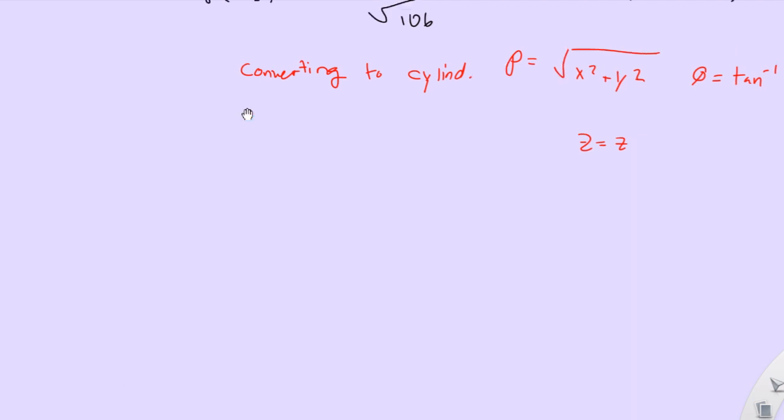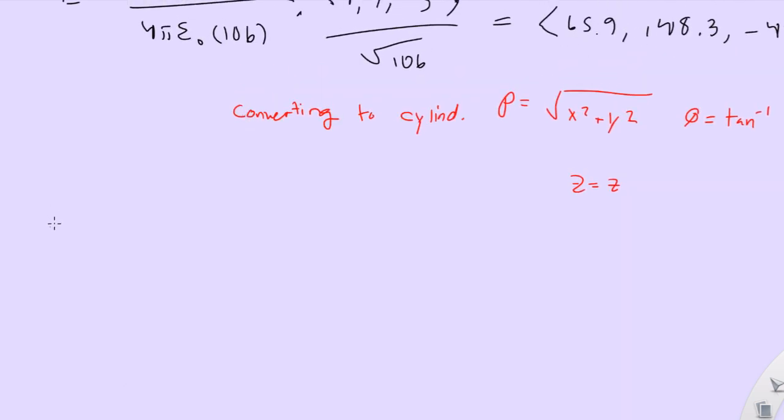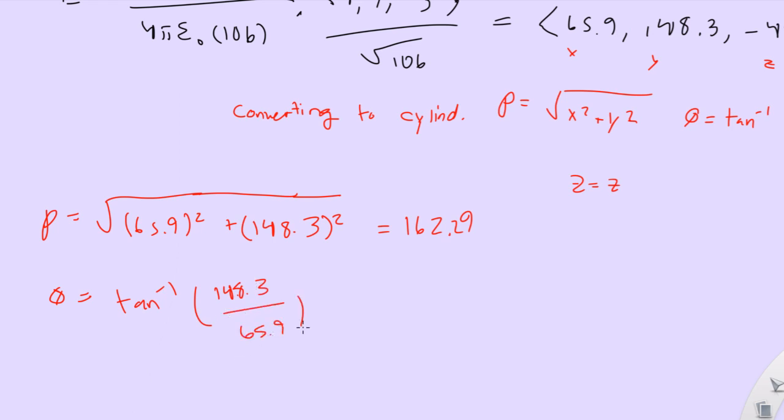So let's start plugging in those numbers. All we have to do is really take these numbers and plug them in, because we know this is x, this is y, that's z, right? So rho would equal the square root of 65.9 squared plus 148.3 squared. And that'll give us 162.9. Phi equals the inverse tangent of, again, just y over x, 148.3 over 65.9.